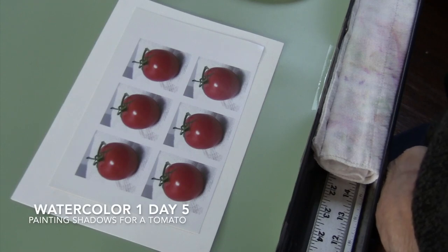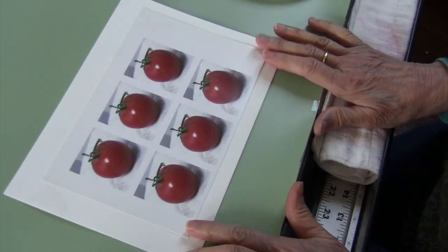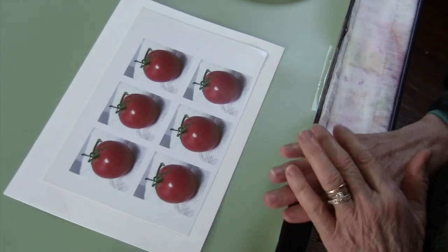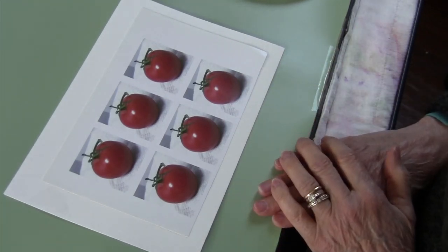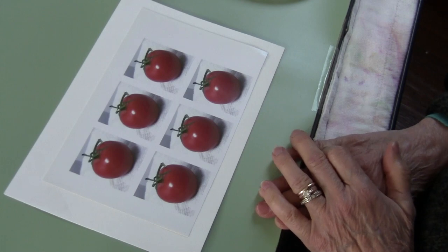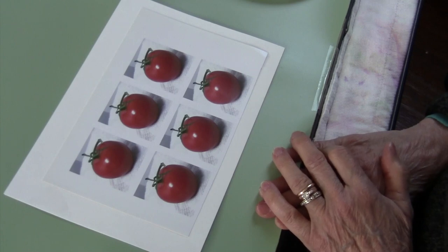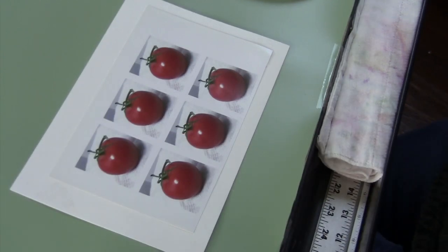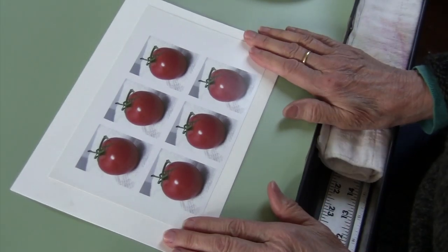This lesson is part of day five. I sent you a photograph of a cherry tomato that you can work with if you choose to, or you can find another tomato, something small, probably no bigger than a Campari because those are already starting to get a little big. You can acquire your own tomato and do this project.